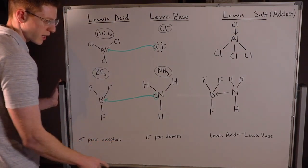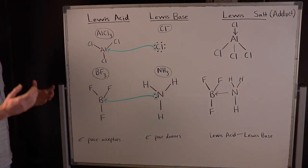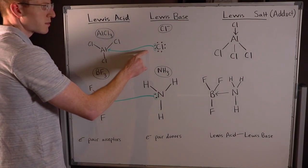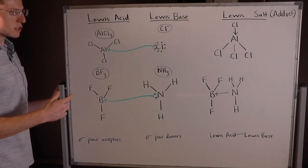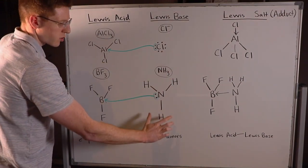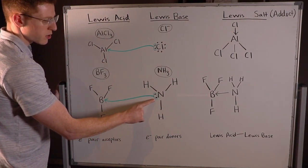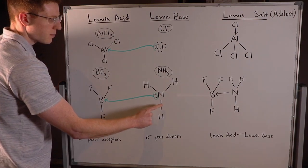Lewis bases are the opposite. They're electron pair donors. They're who supply the electrons. Two examples of these are chloride ion and ammonia, NH3. These both have, if you draw their Lewis dot structures, lone pairs of electrons on the central atom that can be donated.